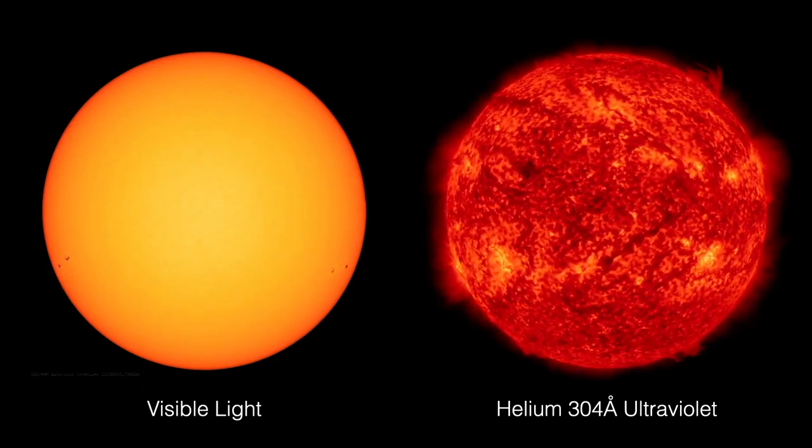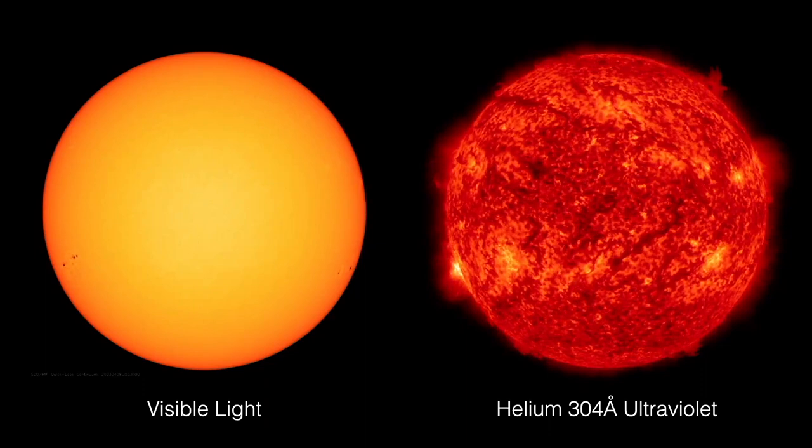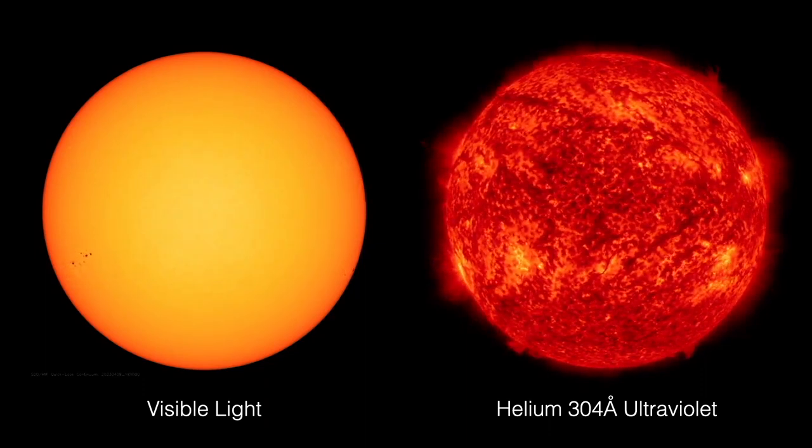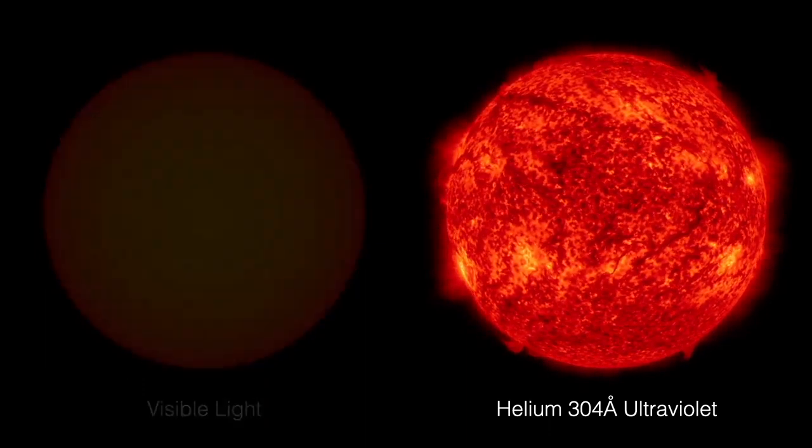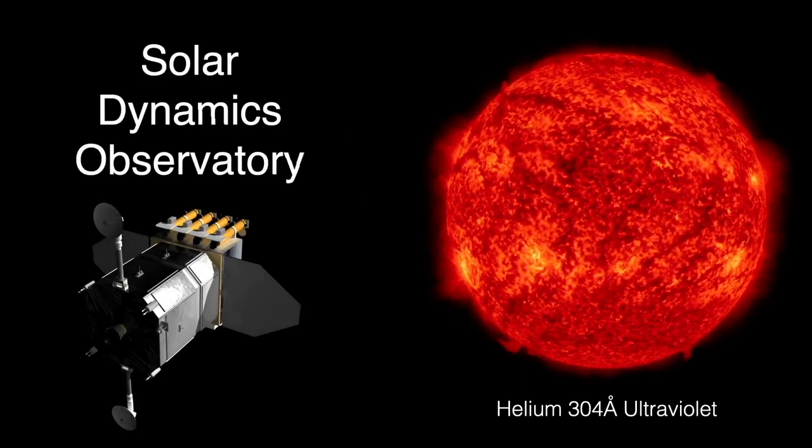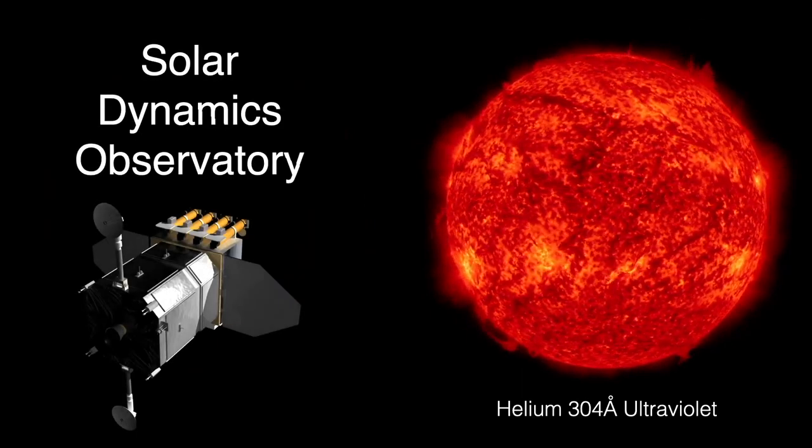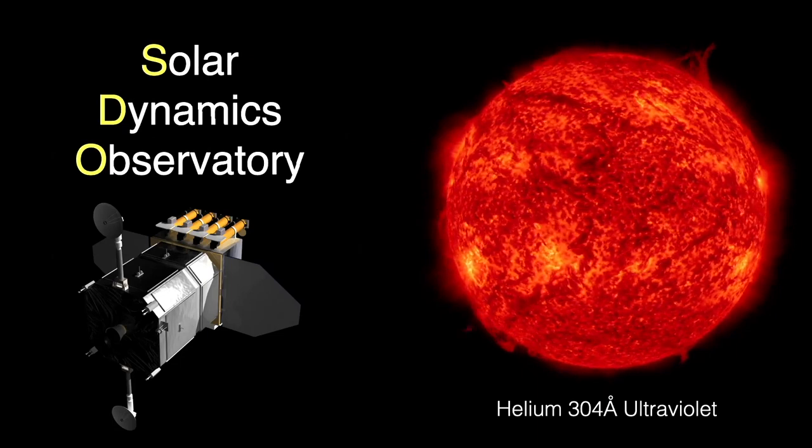Note the prominences on the edge of the sun, normally only visible during a total solar eclipse. This ultraviolet movie was collected by the Solar Dynamics Observatory or SDO spacecraft.